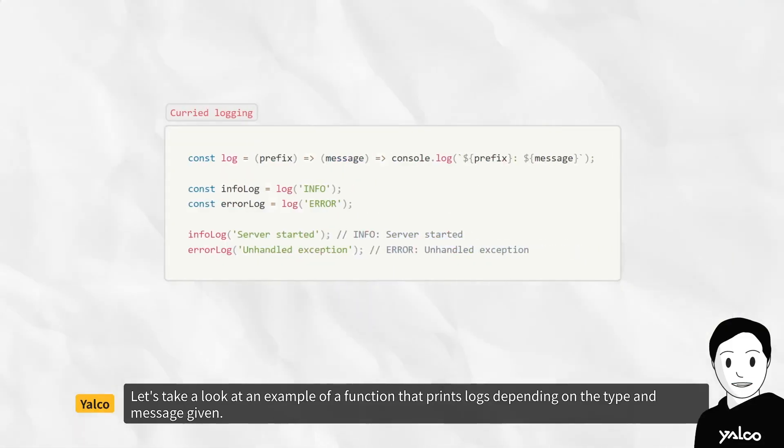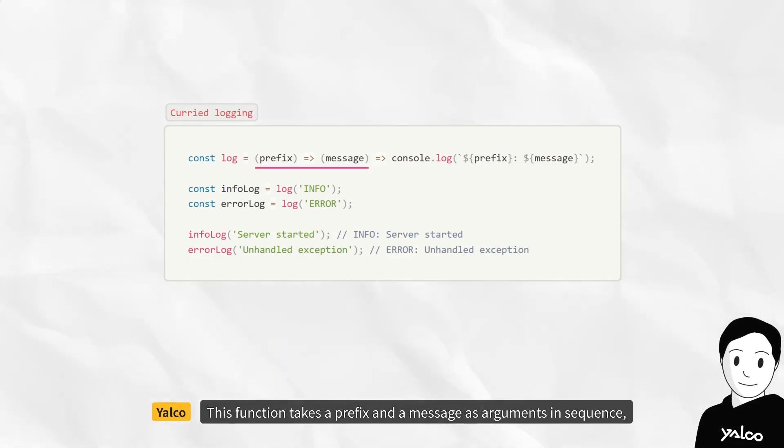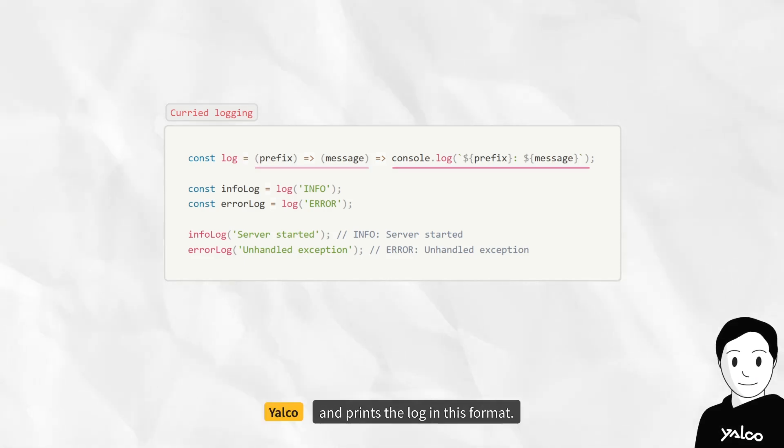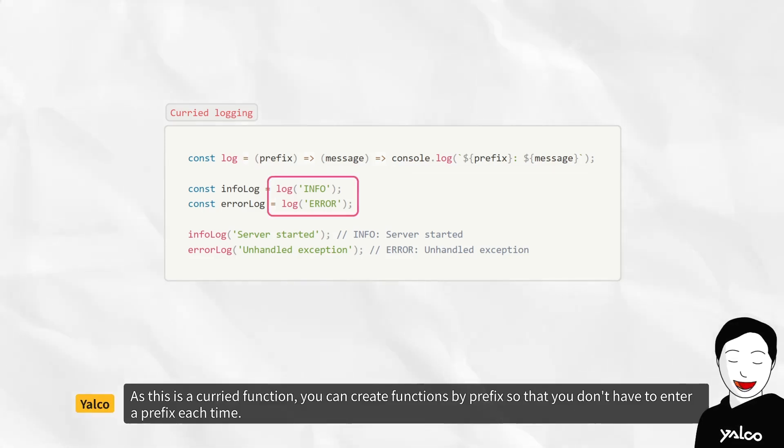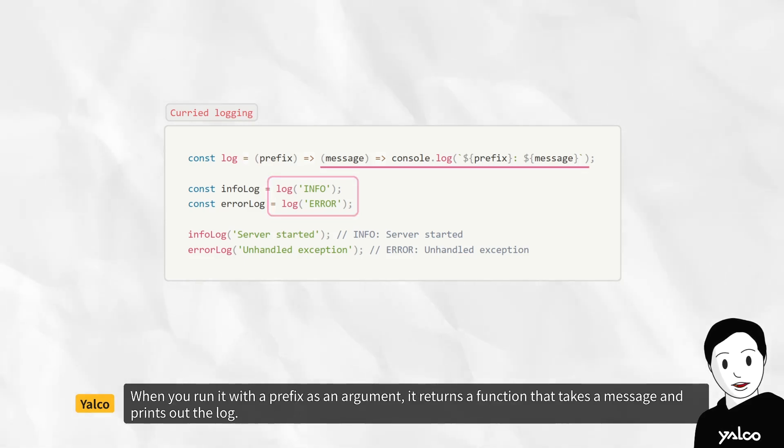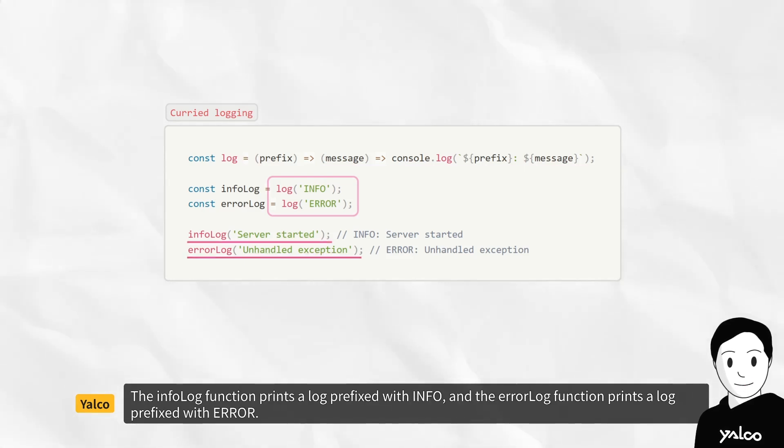Let's take a look at an example of a function that prints logs depending on the type and message given. This function takes a prefix and a message as arguments in sequence and prints the log in this format. As this is a curried function, you can create functions by prefix so that you don't have to enter a prefix each time. When you run it with a prefix as an argument, it returns a function that takes a message and prints out the log. The info log function prints a log prefixed with info, and the error log function prints a log prefixed with error.